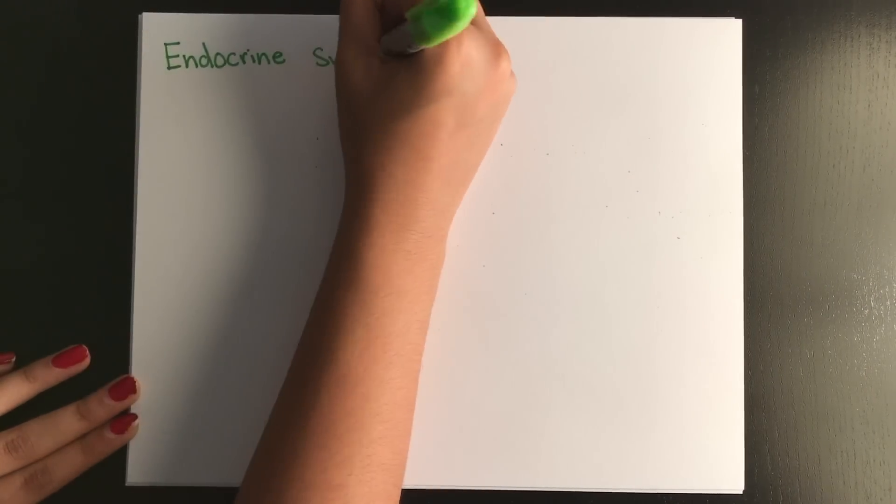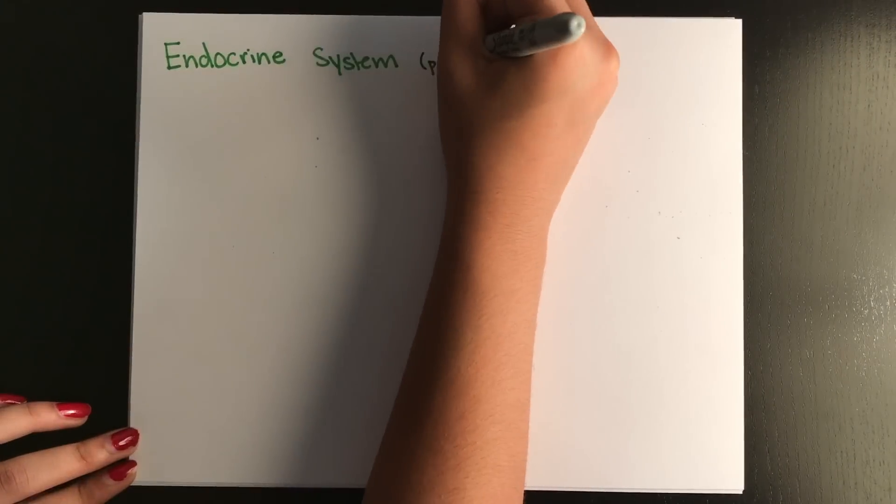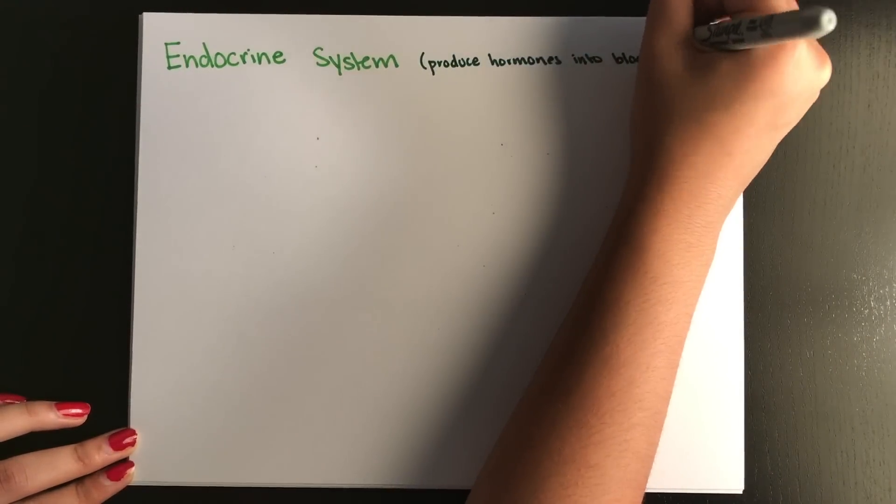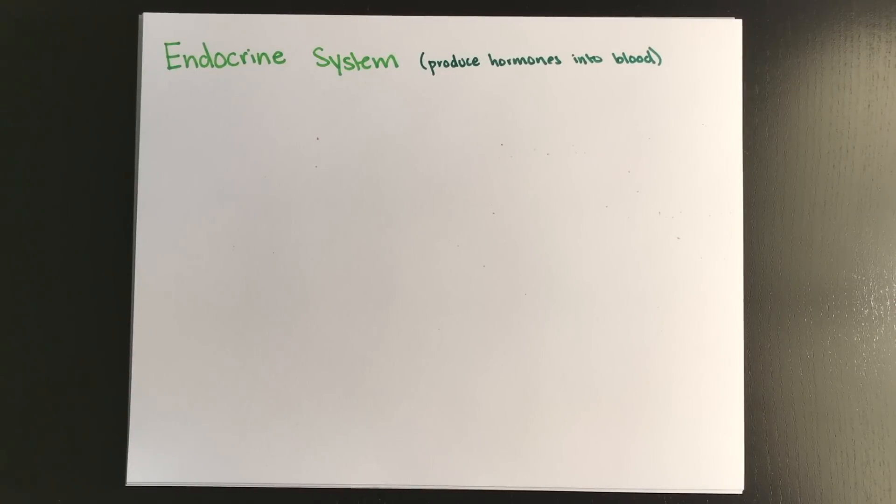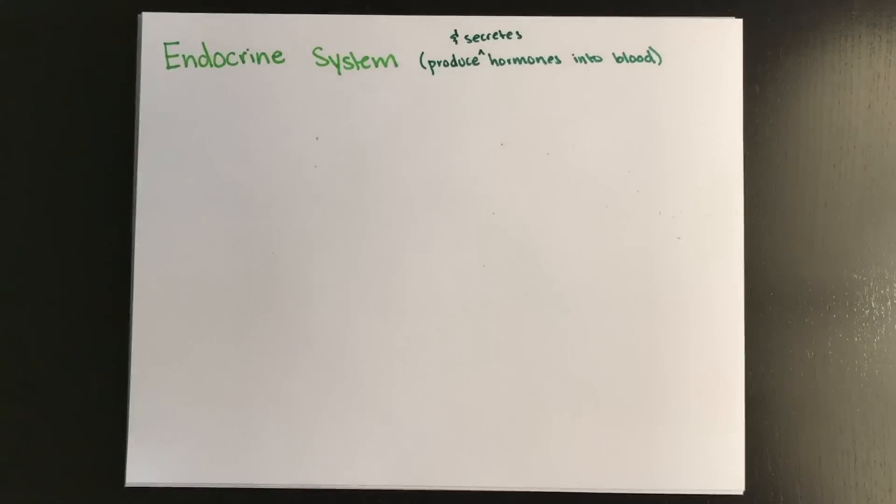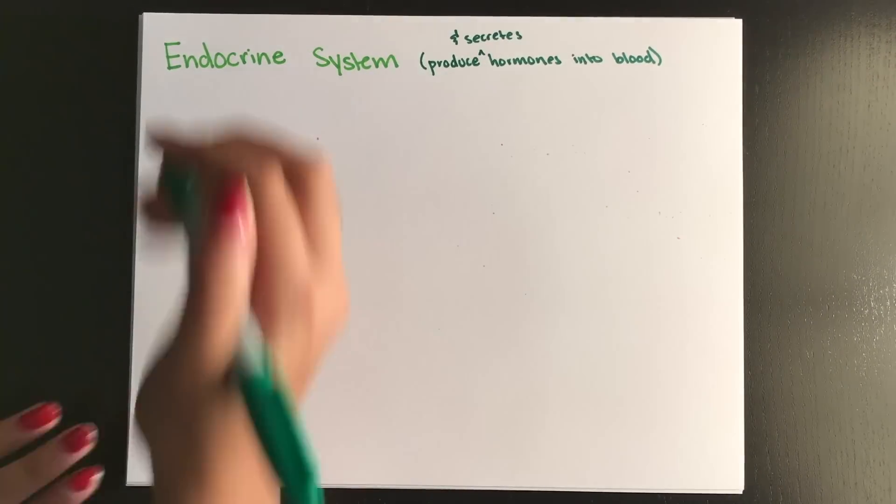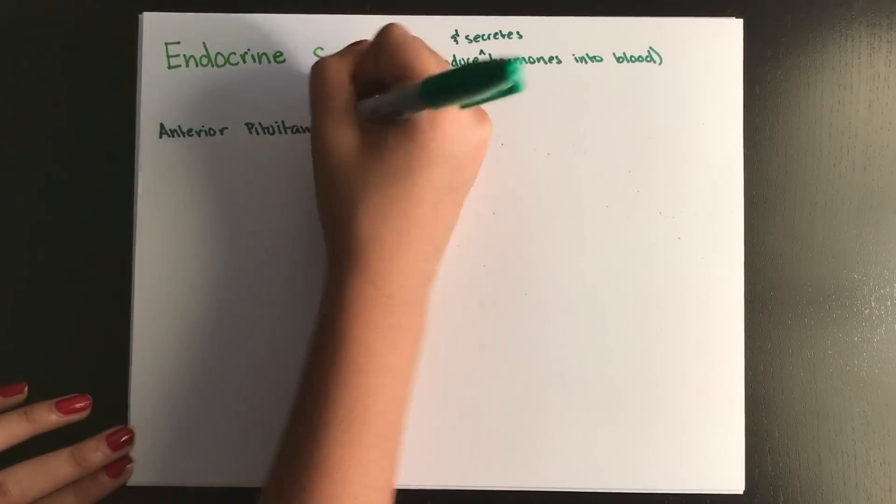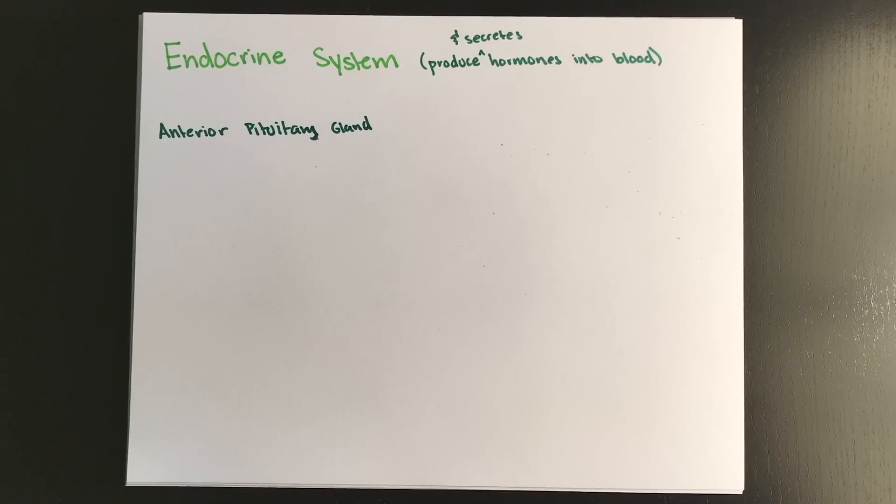Next, we're going to talk about the endocrine system. So endocrine glands produce hormones, which then circulate the body via the blood. So your hormones are pretty much all over your blood, all over your body, all the time. The pituitary gland controls many other endocrine glands, so that's basically the head of this whole deal.